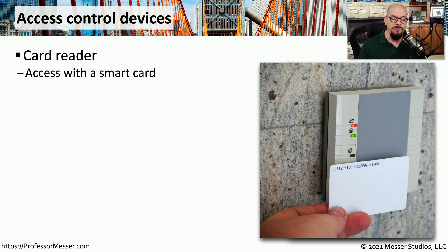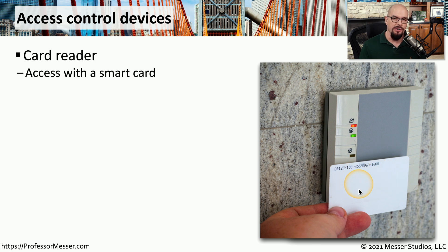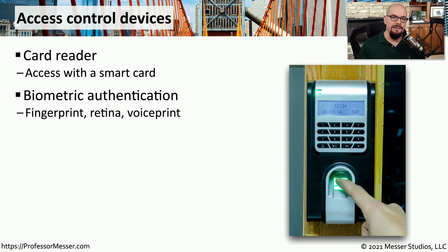In many offices, you would gain access to a room or through a locked door using a card reader like this one. This uses a proximity reader to recognize when a smart card is brought nearby, and if the person holding that smart card is allowed access to the room, this card reader will unlock the door. We could also have a similar access control device that looks at a fingerprint or a retina to provide biometric authentication.